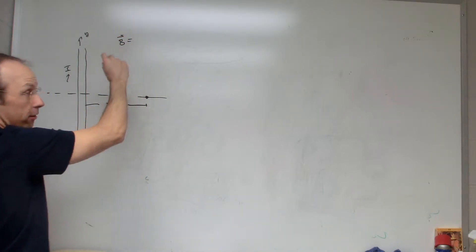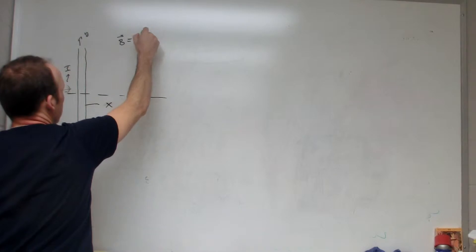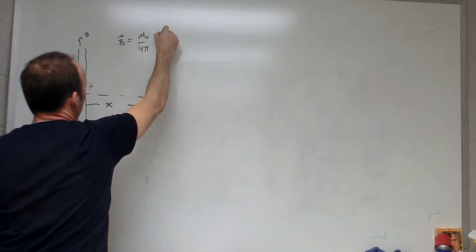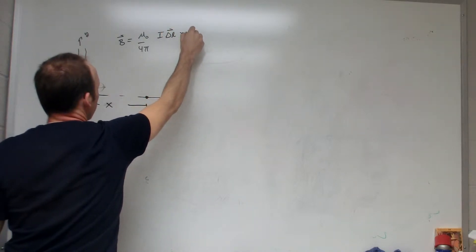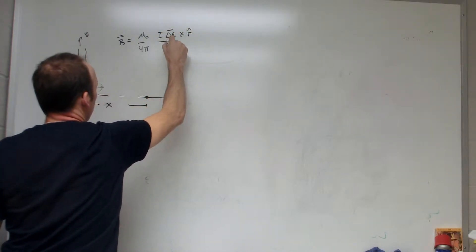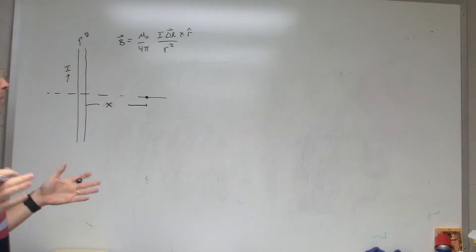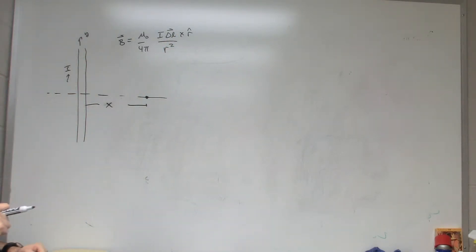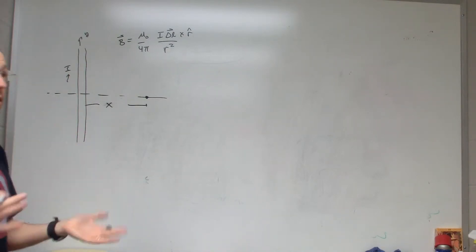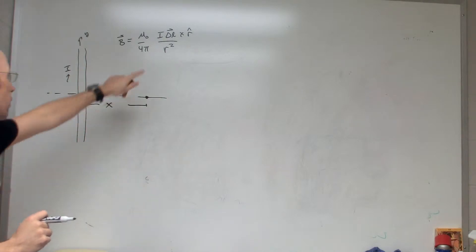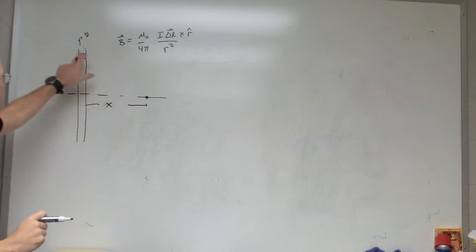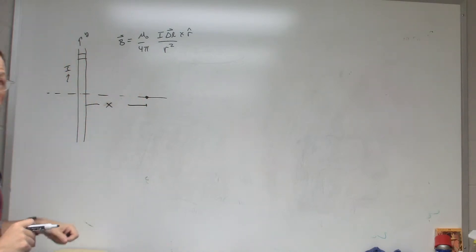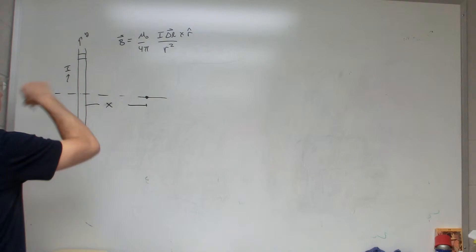The magnetic field due to a piece of wire is going to be μ₀ over 4π times I δL cross r-hat over r² — that's the Biot-Savart law, and instead of using qv we have I δL. But in this case you can't just plug in values, because this piece is much further away than that piece — all different pieces have different distances.